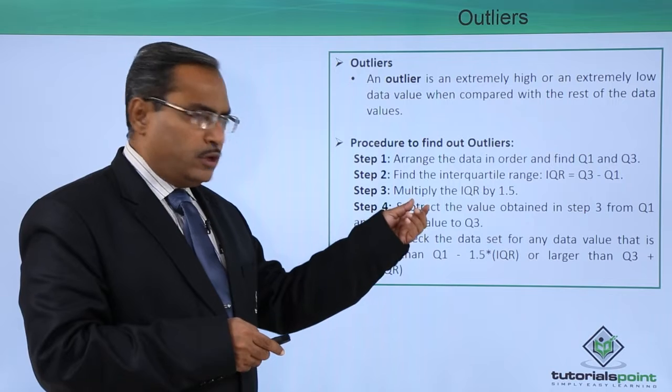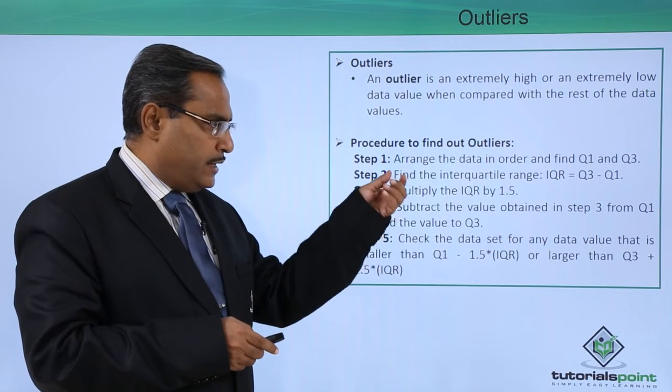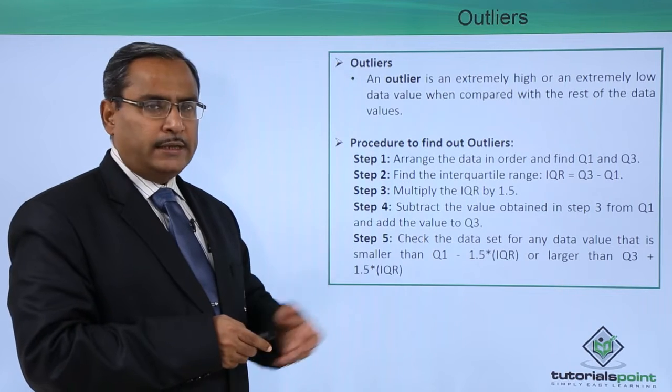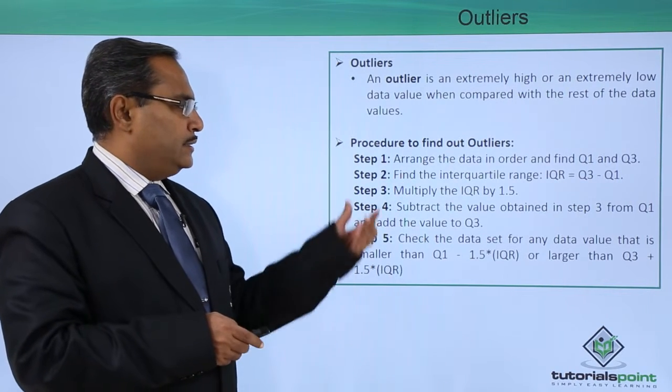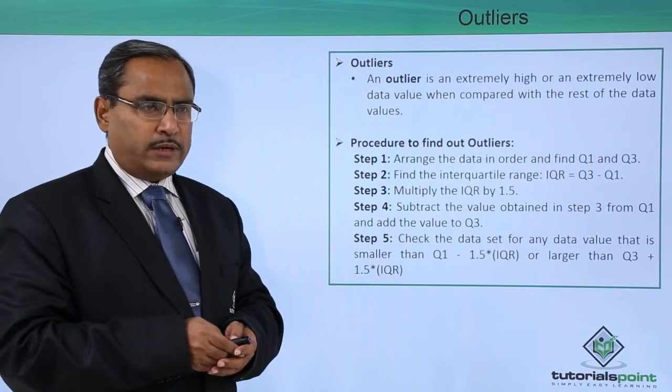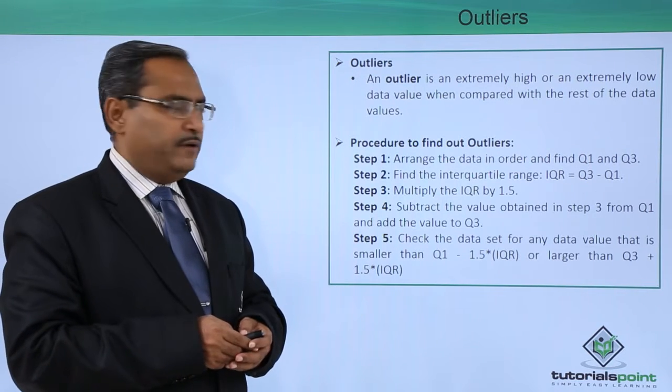Step 2: Find the interquartile range, denoted by the abbreviation IQR. That is nothing but Q3 minus Q1. Step 3: Multiply the IQR by 1.5.